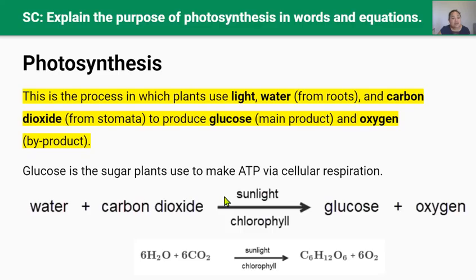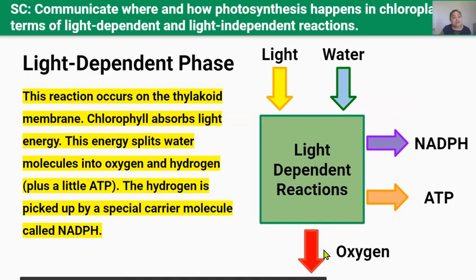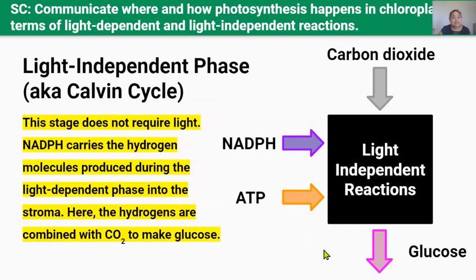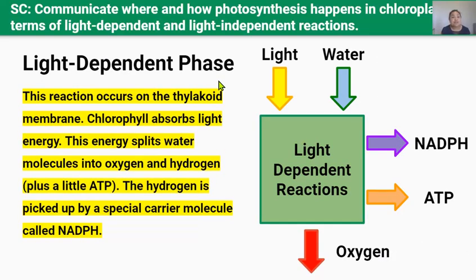You must know this word equation for photosynthesis, but you don't need to know the chemical equation — I've just put it here for interest. There are two chemical pathways in the process of photosynthesis. The first is called the light-dependent phase, and the second is called the light-independent phase. The light-dependent phase requires light, and it takes place on the thylakoid membranes of the chloroplasts.